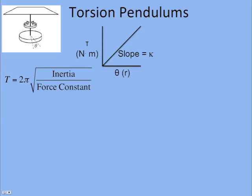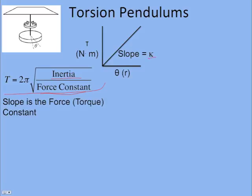For the period of a torsion pendulum, we use the generic period equation: inertia over the force constant. Since this system is rotating, the inertia is the rotational inertia, and the force constant is really the torque constant — the slope of the torque-angle graph. That slope has a name: kappa. So the period equation is 2π times the square root of I over kappa.